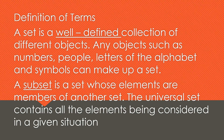Definition of terms: a set is a well-defined collection of different objects. Well-defined means you can list all the elements given in a set. Any objects such as numbers, people, letters of the alphabet, and symbols can make up a set. A subset is a set whose elements are members of another set — meaning a subset is just part of a given set.